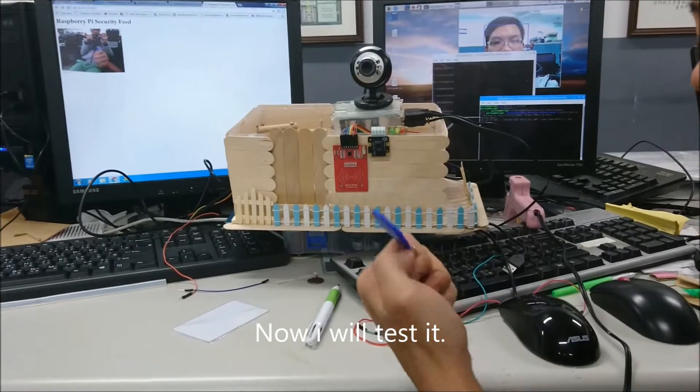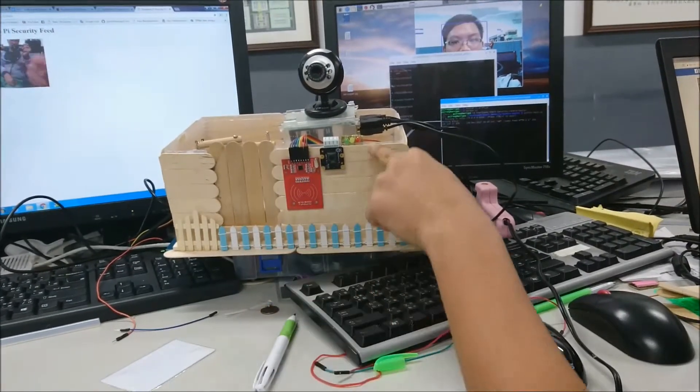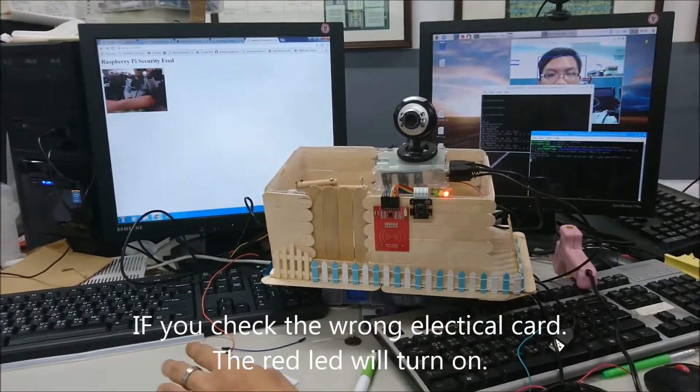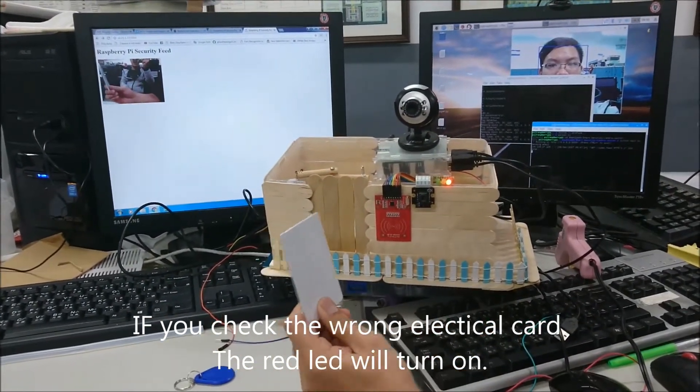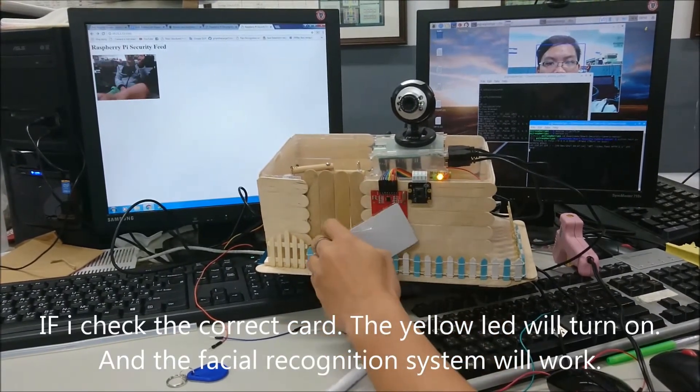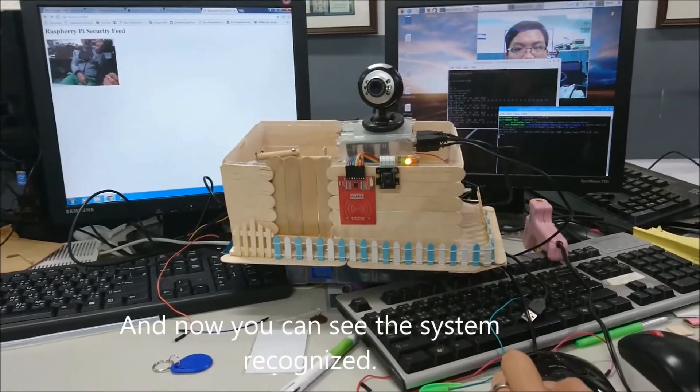Now I will test for you. First, if you check the wrong electrical card, the red light will turn on. You can see. Now if I check the correct electrical card, the yellow light will turn on. Now this will recognize the face.